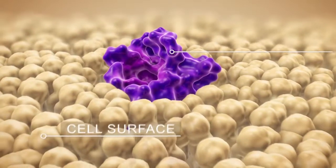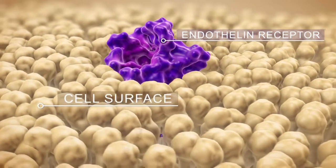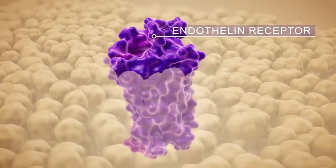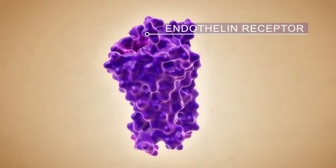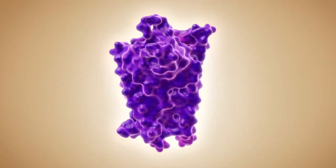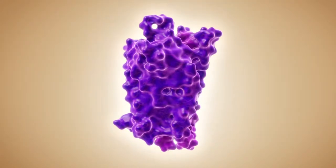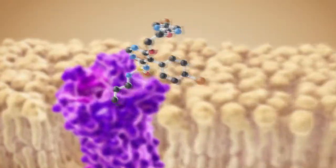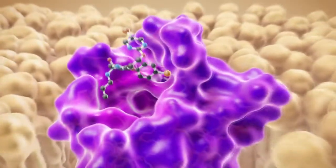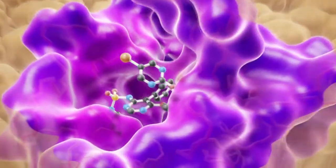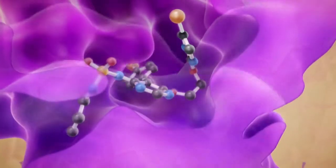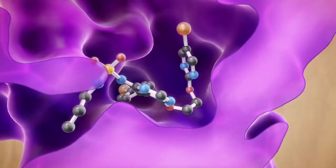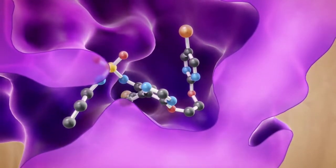Endothelin receptors mediate the detrimental action of endothelin-1 in the pathogenesis of pulmonary arterial hypertension. The antagonist occupies a small part of the endothelin binding site, thereby preventing binding of endothelin-1 and thus opposing its deleterious effects.